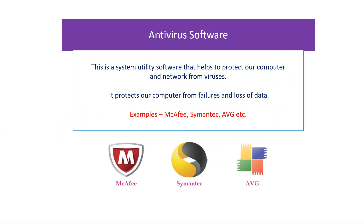Antivirus software is a system utility software that helps to protect a computer and network from viruses. It protects a computer from failures and loss of data due to viruses. Some examples of antivirus software are McAfee, Symantec, and AVG — there are many more.